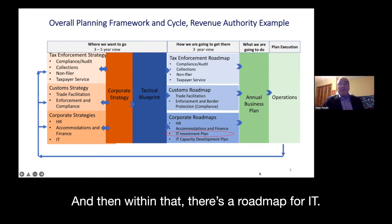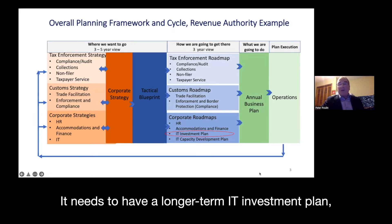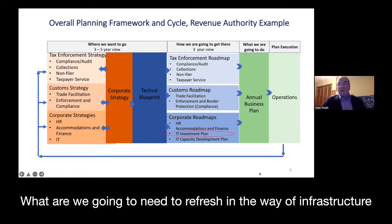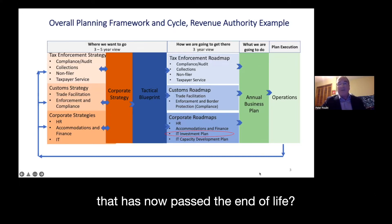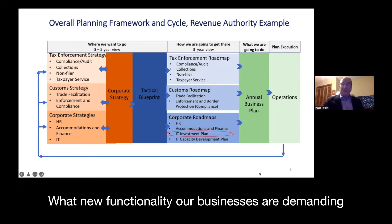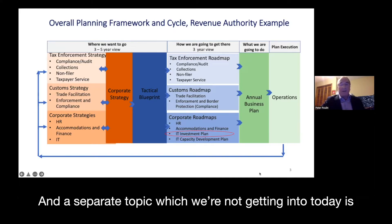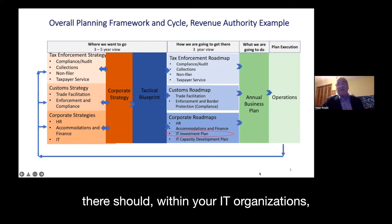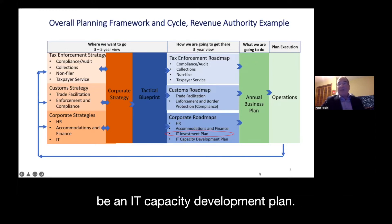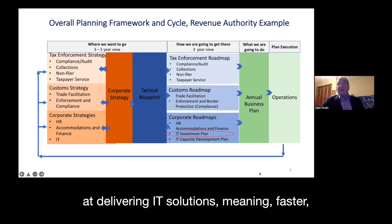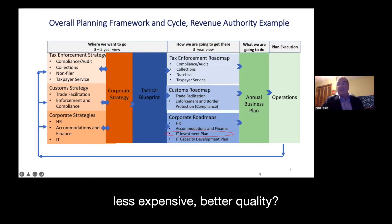Within that, there's a roadmap for IT. It needs to have a longer-term IT investment plan — at least a three-year view — always looking ahead: what do we need to refresh in the way of infrastructure that is now past end of life, what new functionality are businesses demanding that will create new application development projects? A separate topic is that IT organizations should have an IT capacity development plan — how is the government or department going to get better at delivering IT solutions, meaning faster, less expensive, better quality.